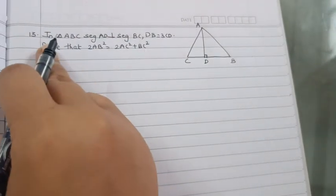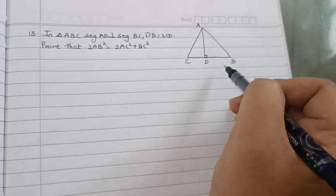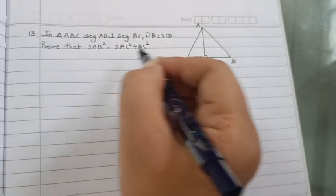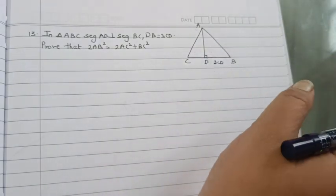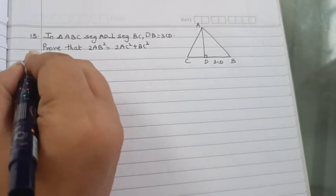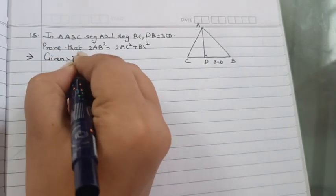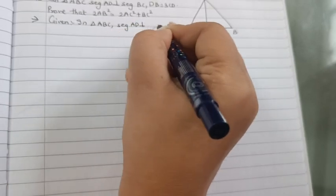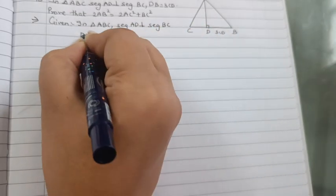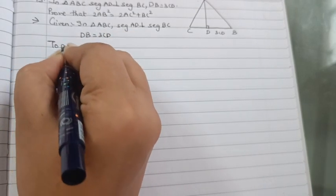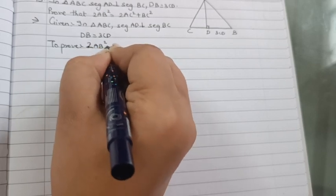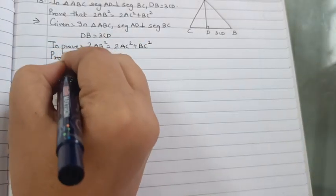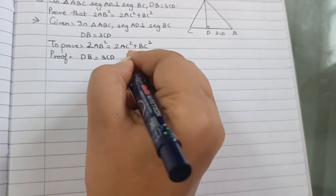So now in question 13 what it has been given: in triangle ABC, AD is perpendicular to segment BC, DB is 3CD. We have to prove 2AB² equal to 2AC² plus BC². Which is given, it is written in triangle ABC, segment AD is perpendicular to segment BC and DB is equal to 3CD. To prove 2AB² is equal to 2AC² plus BC². Let's start the proof.